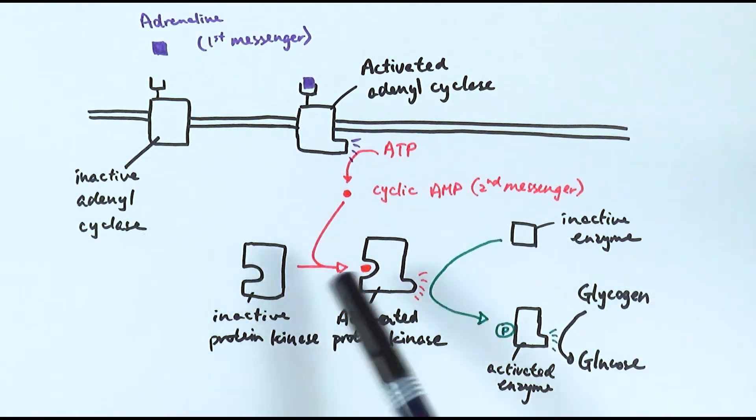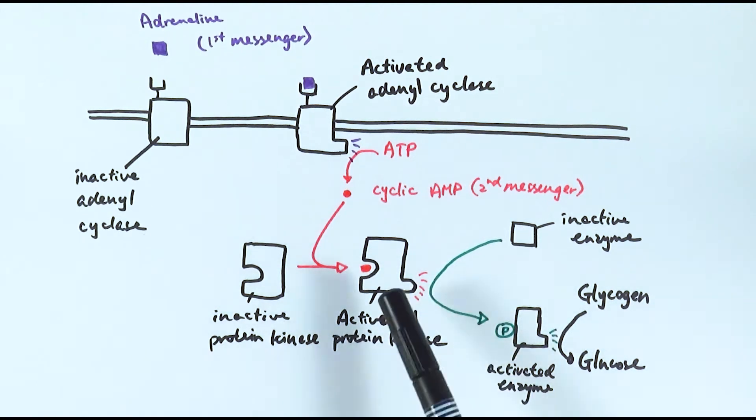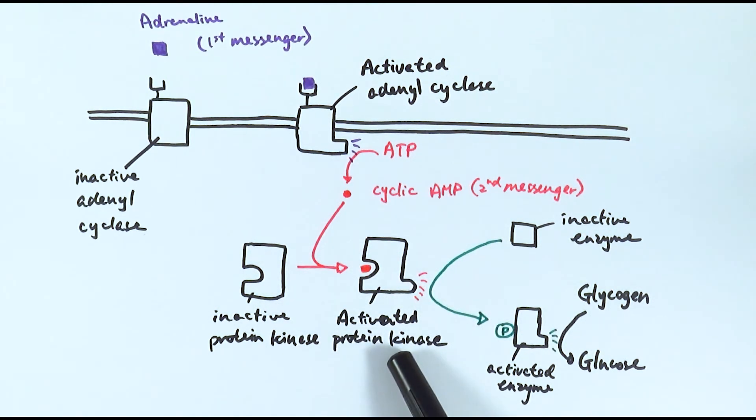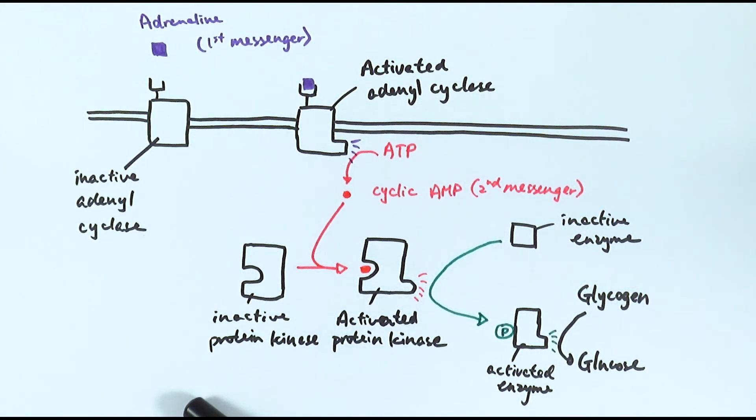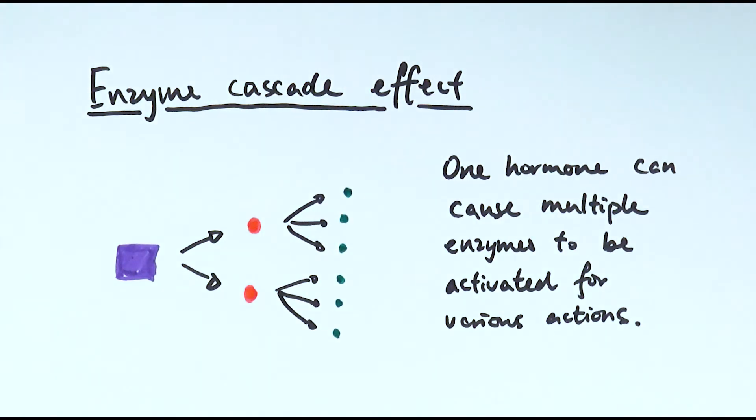But not only that, it's the point that how one single adrenaline is able to cause multiple proteins to be activated, not just within one single series but even in the case of an activated protein kinase. After phosphorylating that enzyme it can then go and phosphorylate another enzyme, causing a different branch but doing the same function. The enzyme cascade effect is where one hormone can cause multiple enzymes to be activated for various actions.